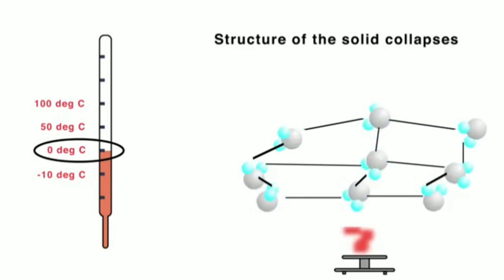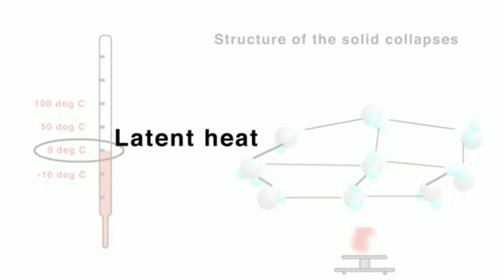The energy we are supplying is not getting recorded in the thermometer. It gets hidden in the beaker. This energy is called latent energy or latent heat. Latent means hidden.